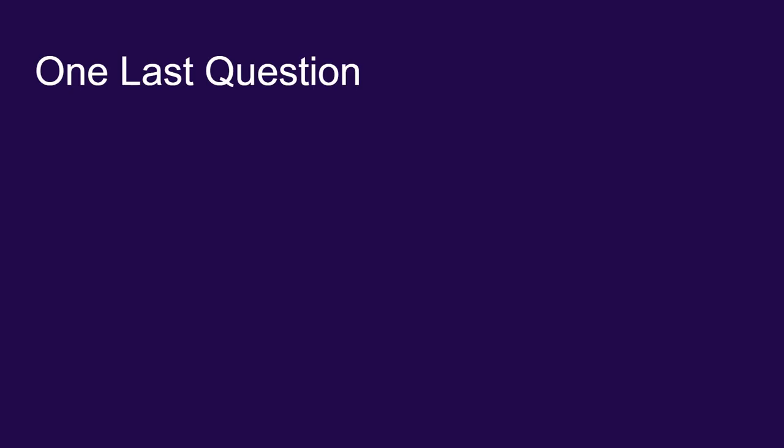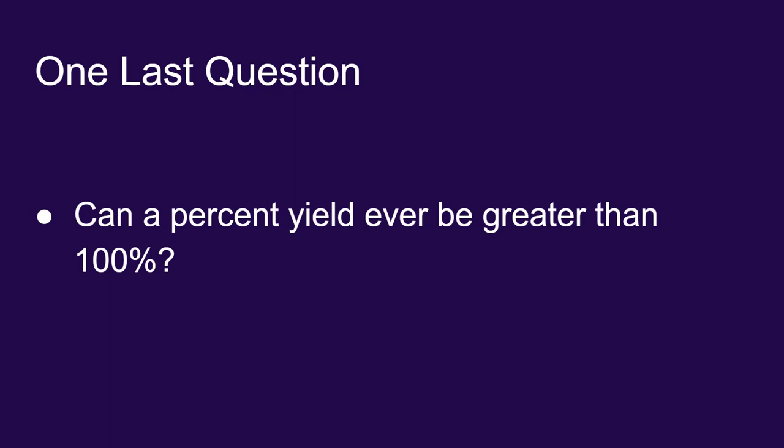One final thought before closing this video. Is it possible to get a percent yield greater than 100%? The answer is yes. It is possible to collect a greater mass than you expected to. This could happen in a decomposition reaction, where you don't let the reaction completely decompose, so you have some excess reactant in your product. This could happen if you have to dry out a solution and drive off the water, and if you don't let it dry out completely, you could be measuring some extra water by mistake. It's possible to get an actual yield higher than the theoretical yield you calculated.